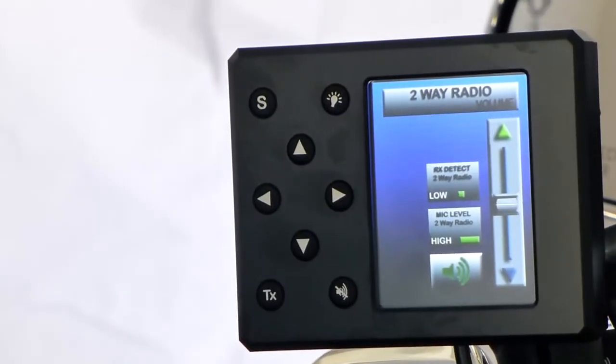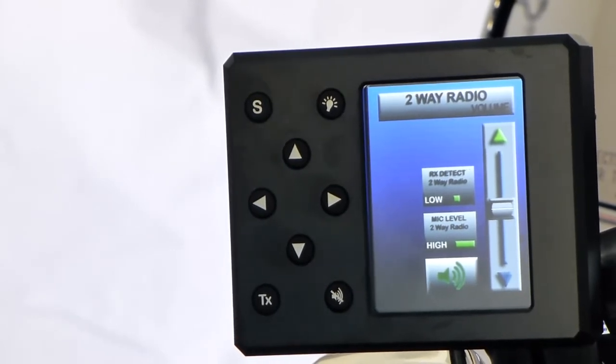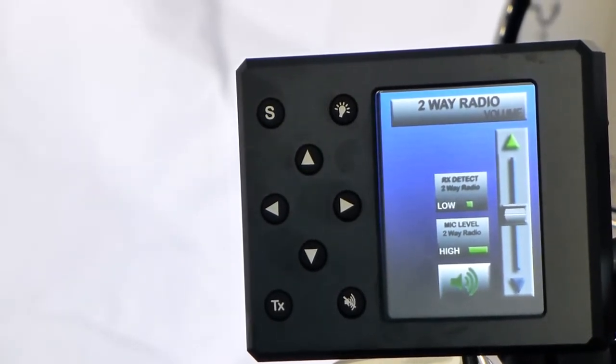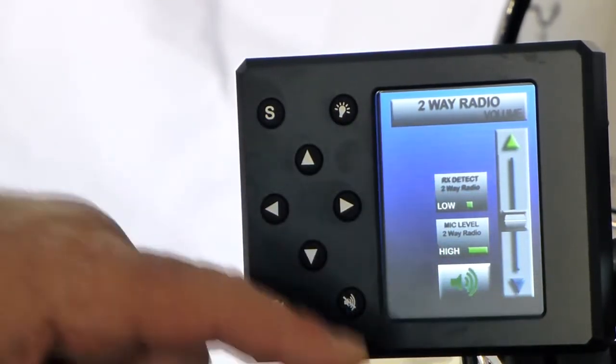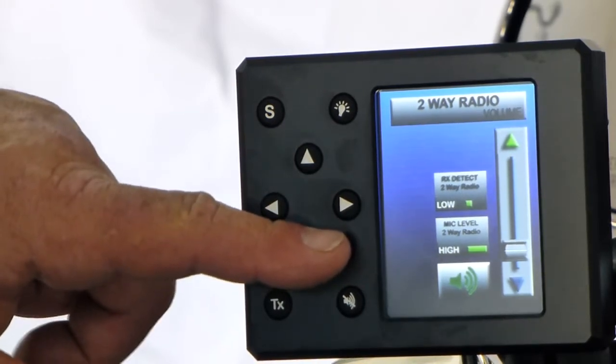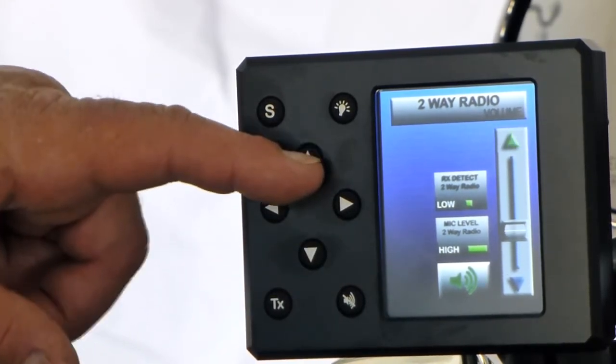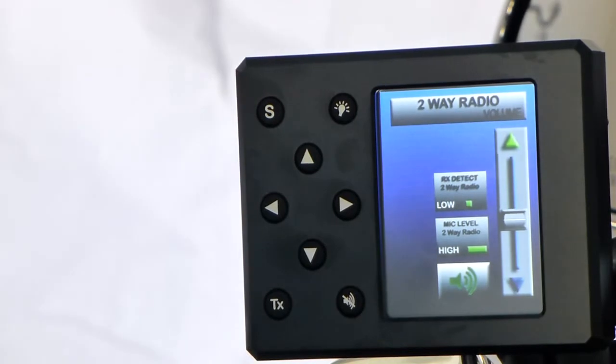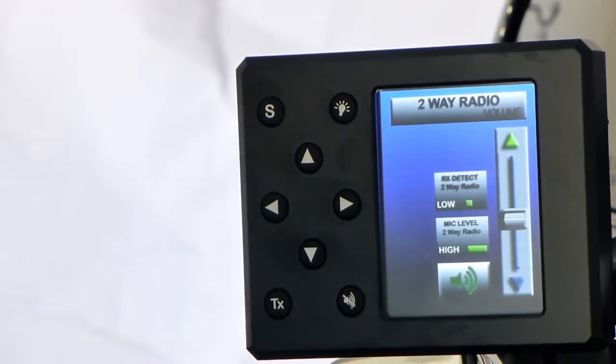Now what we can do is we can lower the CB squelch. And when it gets low enough you'll hear the noise coming out of the earphones. At this point you can adjust this volume down or up to make that a level you would normally hear voice. And then you run the squelch back up again.